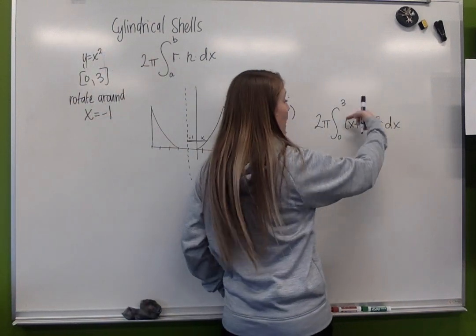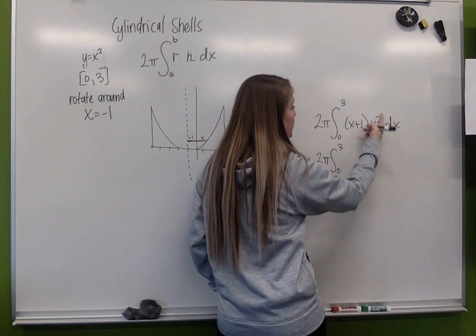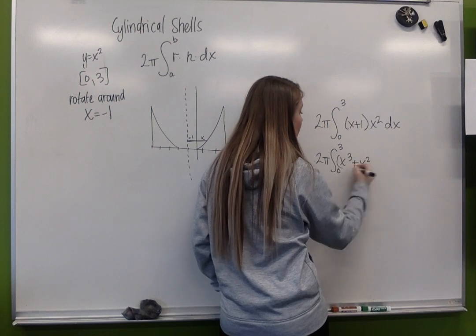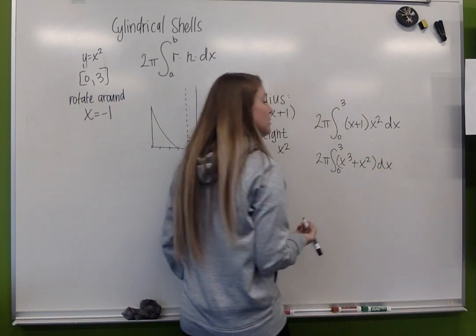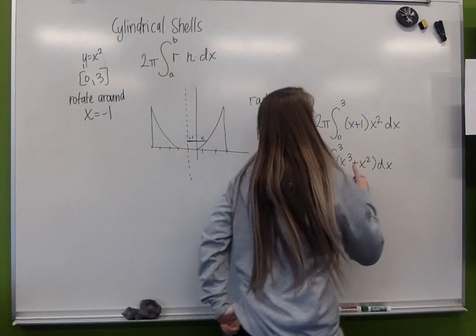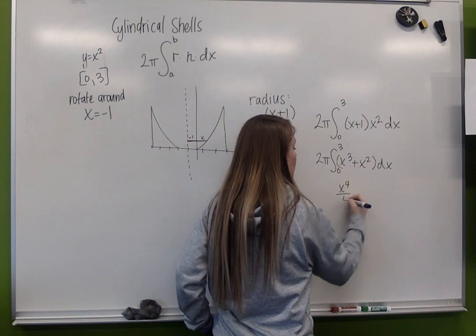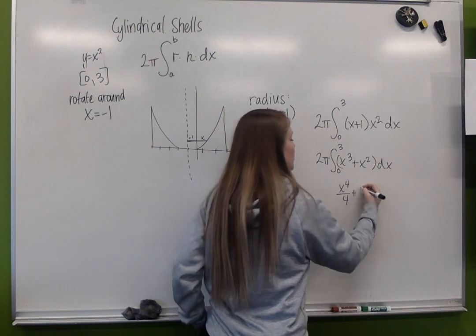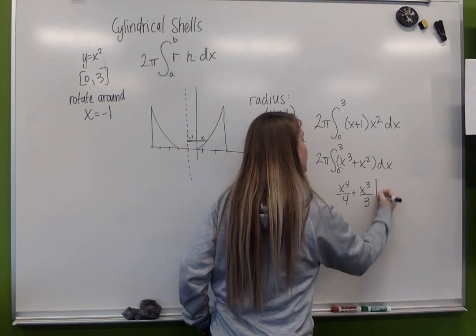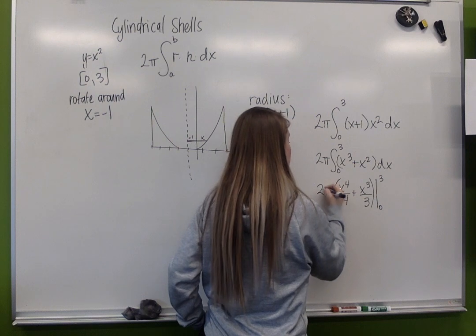I'm going to simplify 2 pi from 0 to 3. I'm going to distribute in, and I'm going to get x cubed plus x squared dx. And now I'm going to integrate. So antiderivative of x cubed, x to the 4th over 4. Antiderivative of x squared is x cubed over 3. From 0 to 3. And we're going to times this by 2 pi.